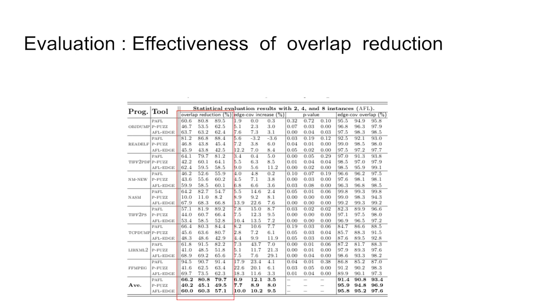The direct goal of AFL-EDGE is to reduce the overlap among individuals. To measure this goal, we consider the number of seeds that are disabled from each instance as a metric. As shown in this table, our solution can effectively reduce the potential overlaps in the parallel mode.